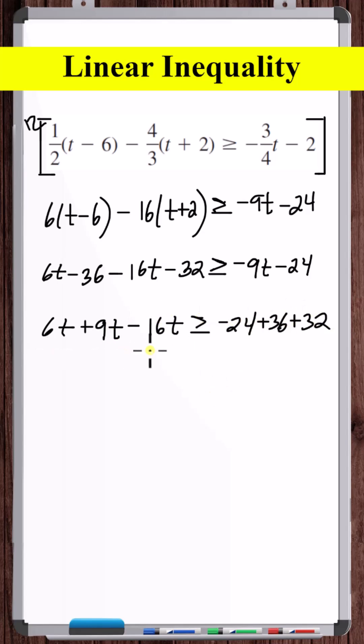Okay, 6t minus 16t is minus 10t, plus 9t is minus t. Minus 24 plus 36 is positive 12. 12 plus 32 is 44.